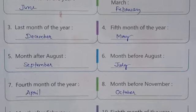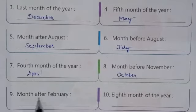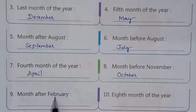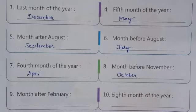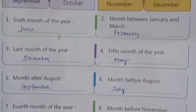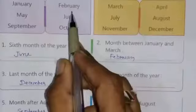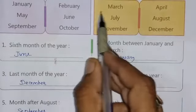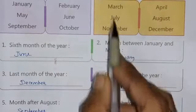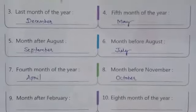Question number nine: the month after February. So after February, the month is March. Write down the answer: March.